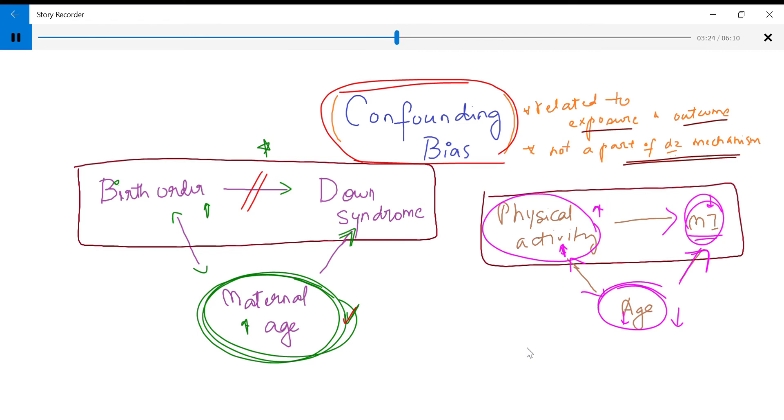So when you introduce this, the association between this and this is gone. So that is what a confounding bias is. So it was confusing the results. And when you include it as a part of your criteria, you will realize that there is no real association between these two.